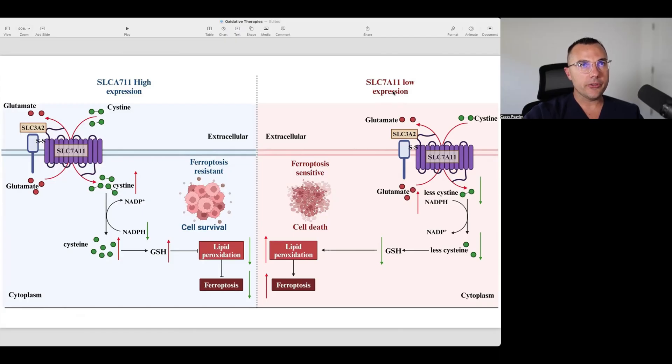When either the expression of SLC-7A11 is low or SLC-7A11 is inhibited, and we've talked about this in many videos about what substances can potentially inhibit SLC-7A11, then that means less glutathione is available to the cells. That puts the cancer cells in a ferroptosis-sensitive state. It basically means that these cells are ripe for destruction from oxidative therapies.